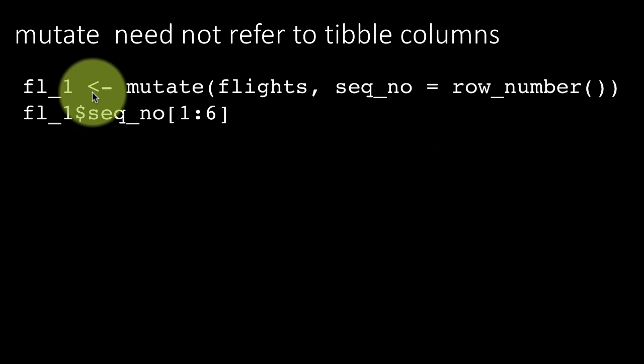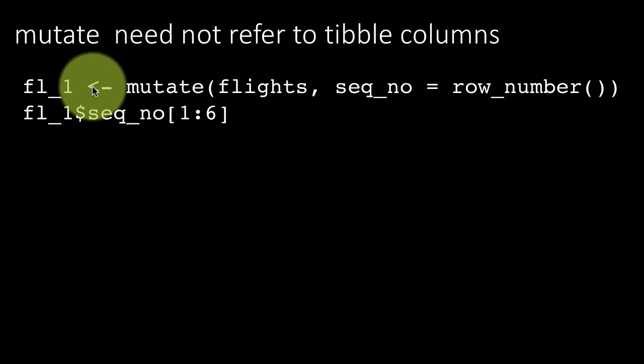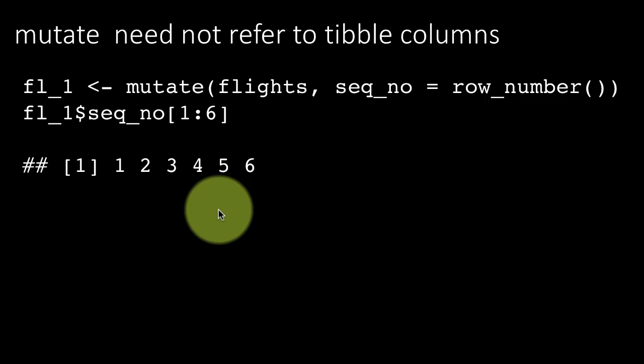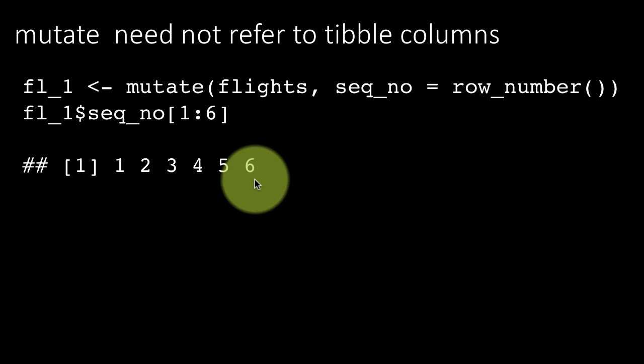So now you can see fl underscore 1 is the new tibble that I'm creating as a result of this operation. I'm assigning that, and from that I'm seeing show me the sequence numbers 1 to 6, and of course as I expect they are 1, 2, 3, 4, 5, 6.